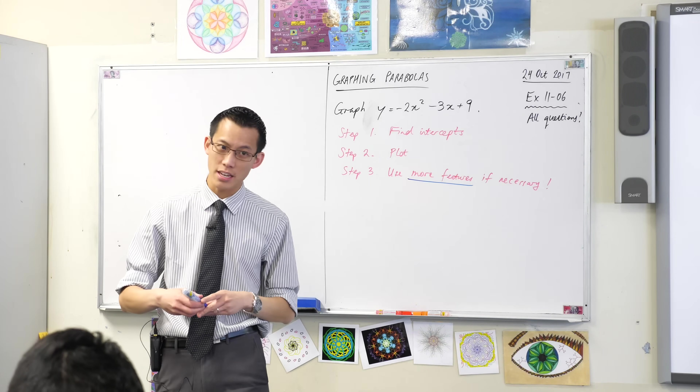Step one — and this really is the main step — find your intercepts. There are two kinds: x and y. How do you find x-intercepts? You let y equal zero. And if you want to find y-intercepts, you let x equal zero. It's a bit funny that those are backwards, but we can do both of these and find out where our graph intersects with the axes. So let's find the intercepts.